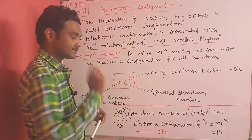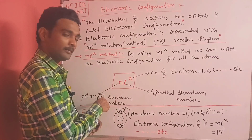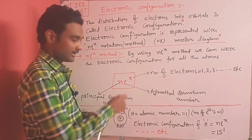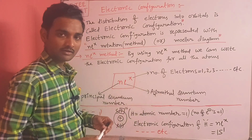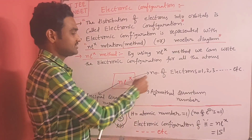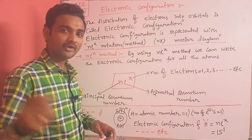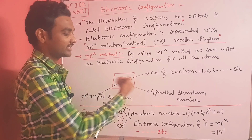The notation is: n, l, x. Here n means the principal quantum number or orbit number, l means the azimuthal quantum number, and x means the number of electrons — one, two, three, four, and so on.